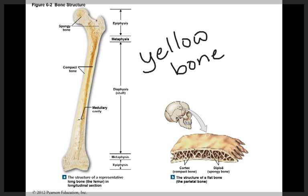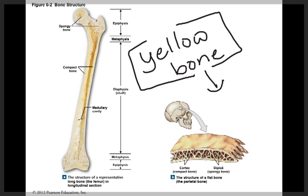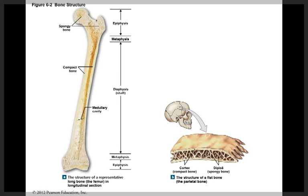There's also yellow bone marrow. Yellow bone marrow can be found in other bones, and it contains adipose tissue, which is important as an energy reserve. Interestingly, in certain pathological conditions such as leukemia, yellow bone marrow can actually convert to red bone marrow to produce blood cells if the red bone marrow isn't doing so.